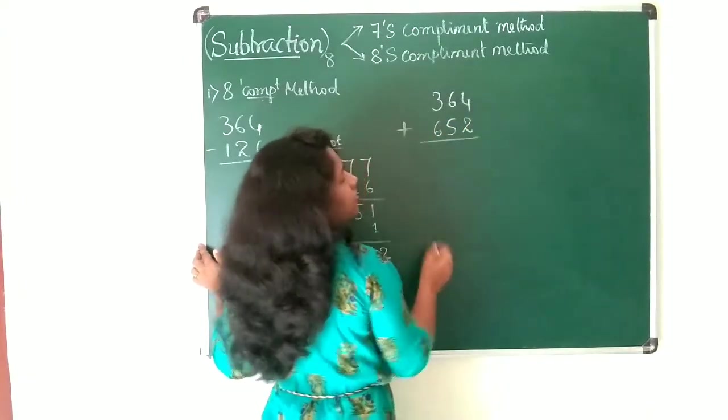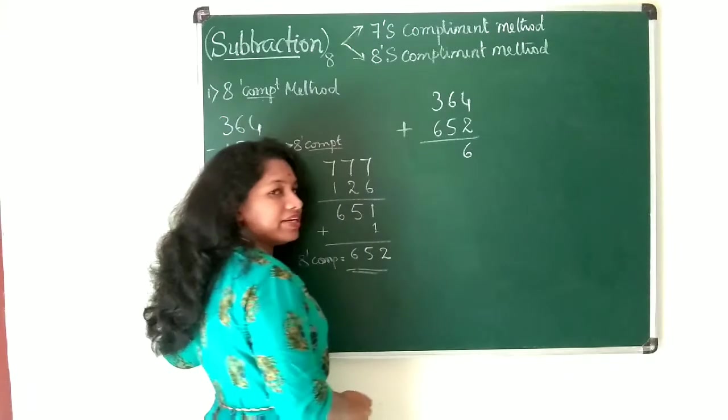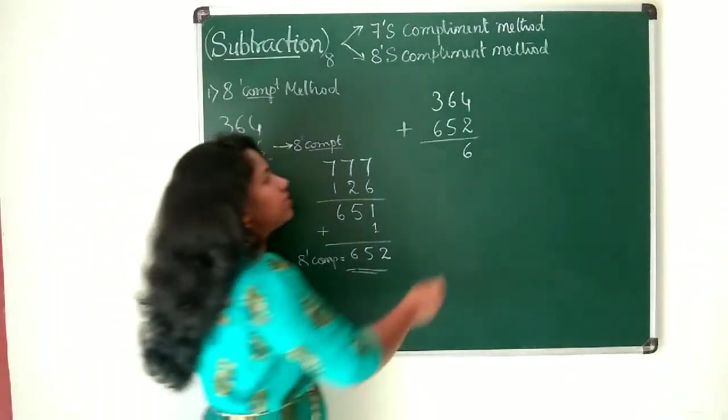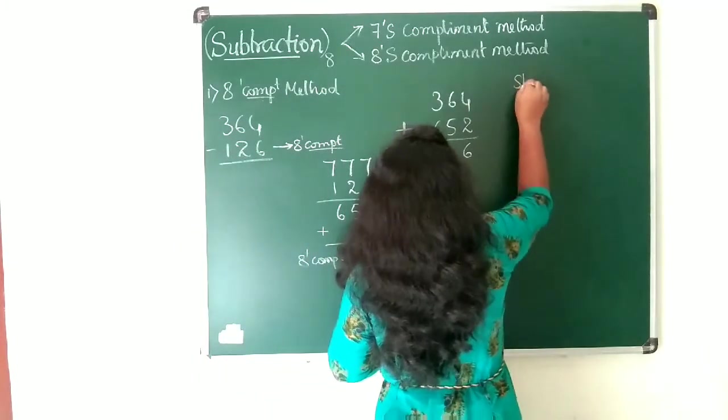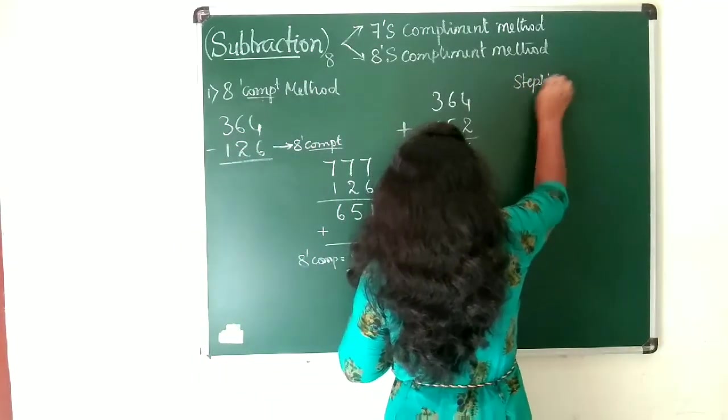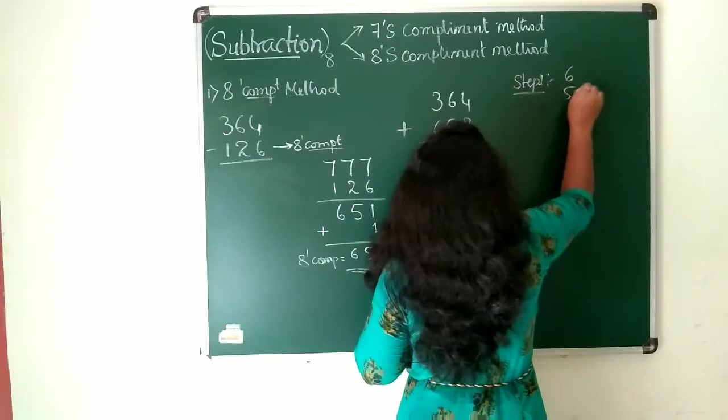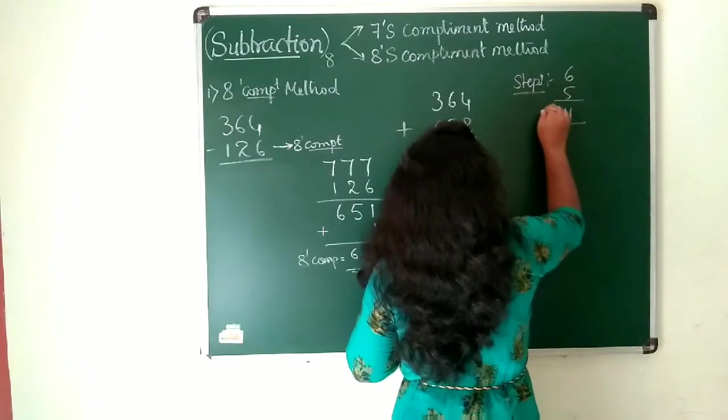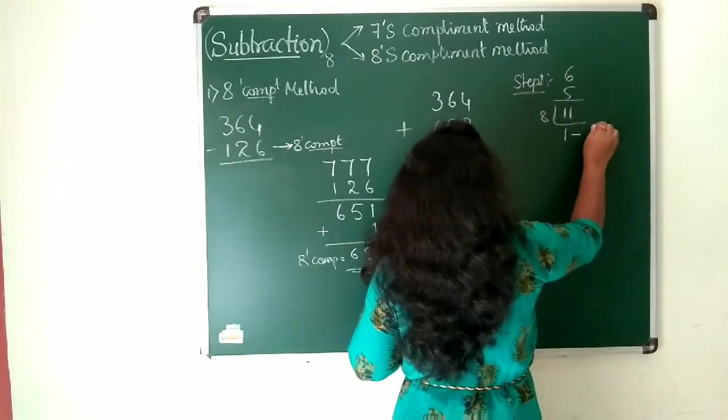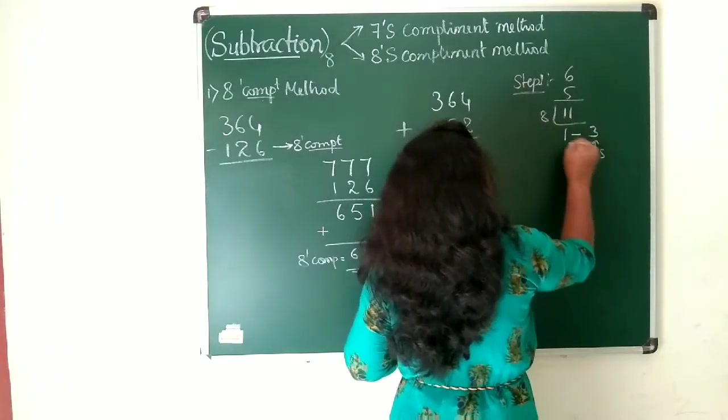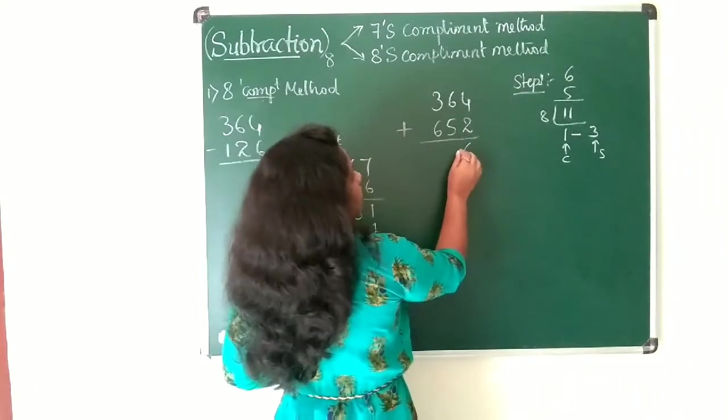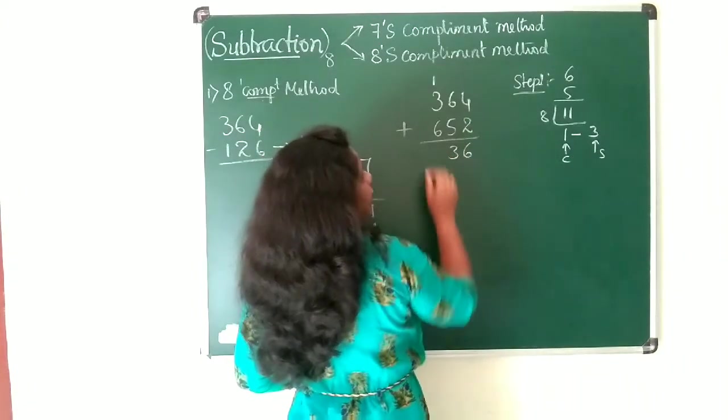Then add: 4 plus 2 is 6, which is a valid number in octal set. Next is 6 plus 5, which is 11, which is not valid in octal number system. So step 1 says that 6 plus 5 is 11. Convert this to octal. 8 goes into 11 one time with remainder 3. So you will be getting 3 as a sum and 1 as carry.